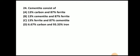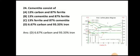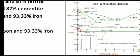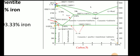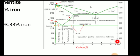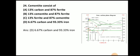Next question: Cementite consists of? The answer is 6.67% carbon and 93.33% iron. Here you can see the region in the phase diagram where cementite is present — up to 6.67% carbon, and the rest is iron.